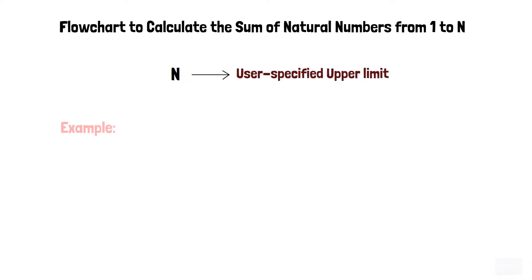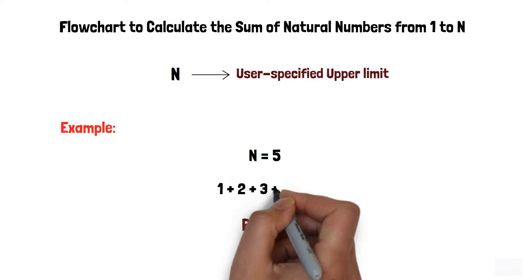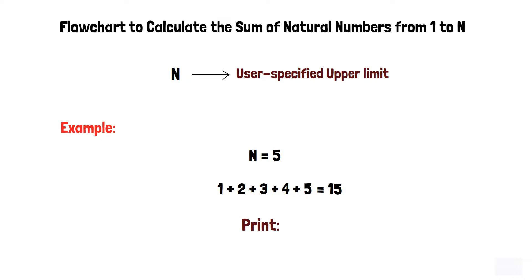For example, consider if n is equal to 5. Then we need to print the sum of all numbers from 1 to 5. That is 1 plus 2 plus 3 plus 4 plus 5, which is equal to 15.